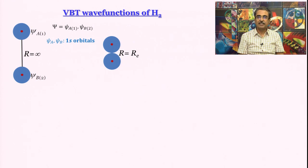What happens when they are very close, let us say when the inter-nuclear separation is equal to the equilibrium bond length? At that time you cannot assume that electron number 1 is in atom A only or moves in the field of nucleus A only. You have to also consider that it experiences the field by nucleus B.